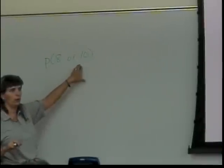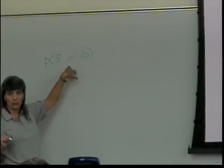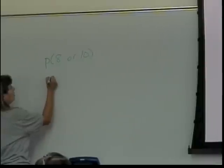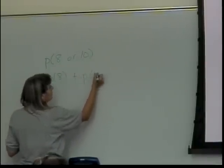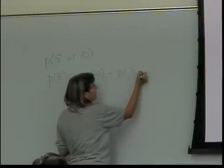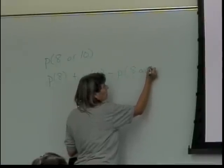It has an or in it, right? So I can use the formula. That'll be the probability of getting an 8 plus the probability of getting a 10 minus the probability of getting an 8 and a 10 at the same time.